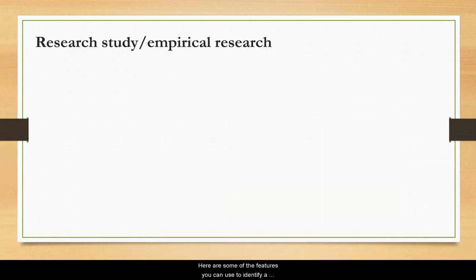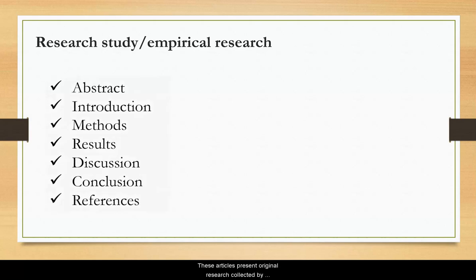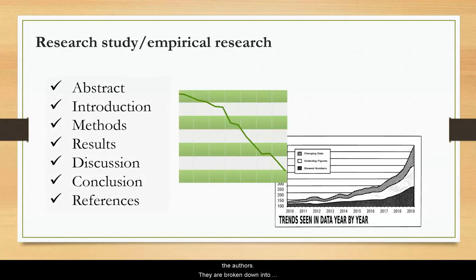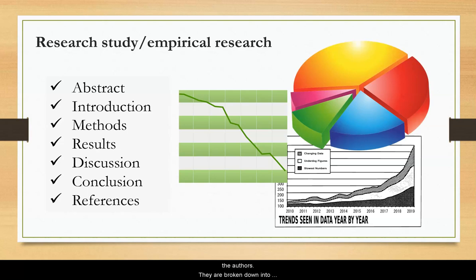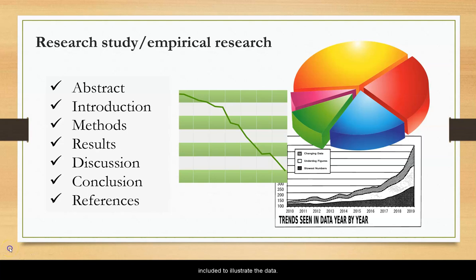Here are some of the features you can use to identify a research study, also called empirical research, due to the collection of primary data. These articles present original research collected by the authors. They are broken down into sections, so it is easy to navigate through the article and know what each section is presenting. Charts and graphs are often included to illustrate the data.